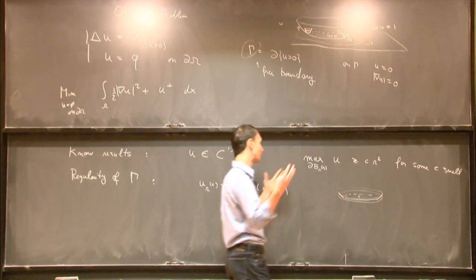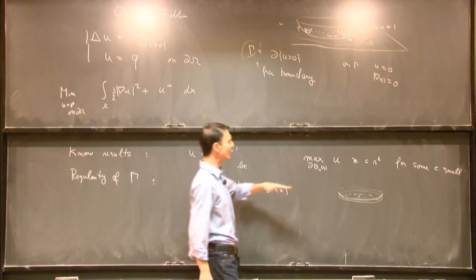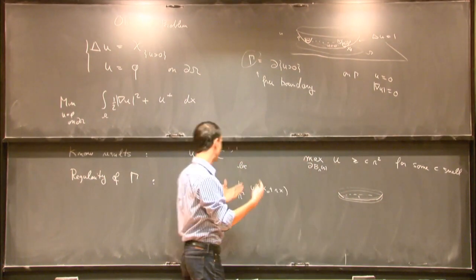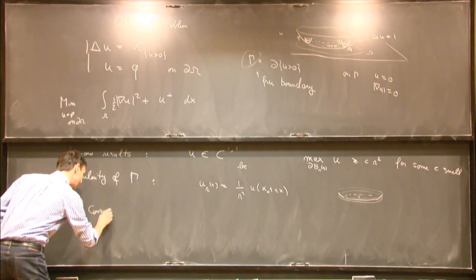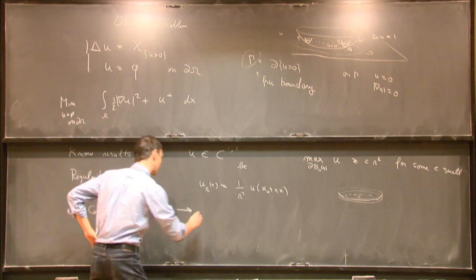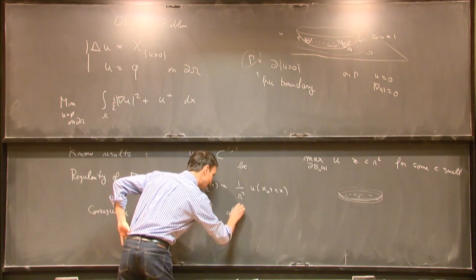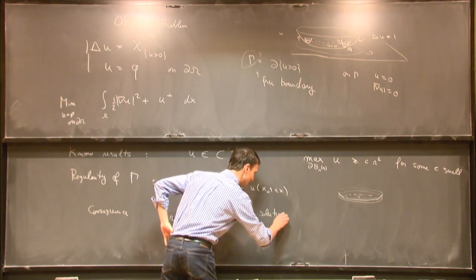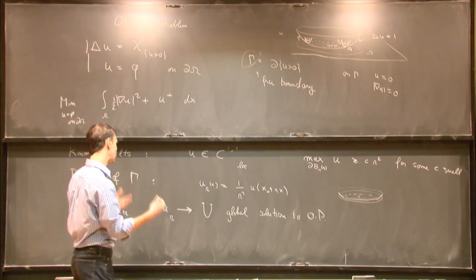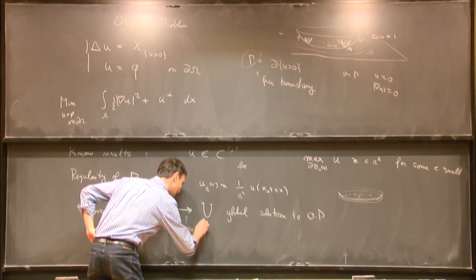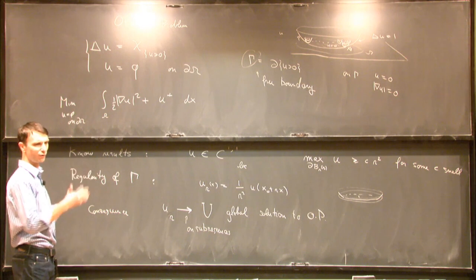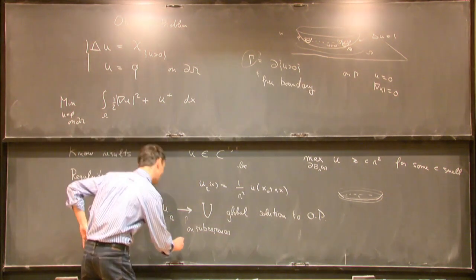This non-degeneracy is important: when performing a quadratic blow-up, the function cannot disappear (become identically zero) since we have a lower quadratic bound, and it cannot become infinite since we have a parabola from above. Consequently, u_r must converge to some global solution of the obstacle problem, with convergence on subsequences and locally uniformly.